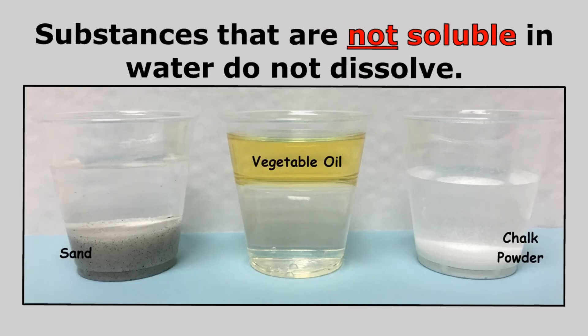Substances that are not soluble in water do not dissolve — I can also call these insoluble substances. So you can see that the sand and the chalk powder are solids that just sank to the bottom of the cup and are not dissolving. The vegetable oil is an insoluble liquid, and you can see that vegetable oil is clearly not mixing with the water.